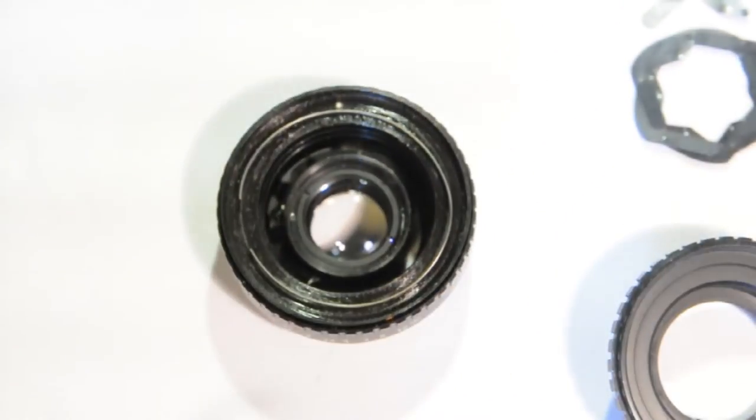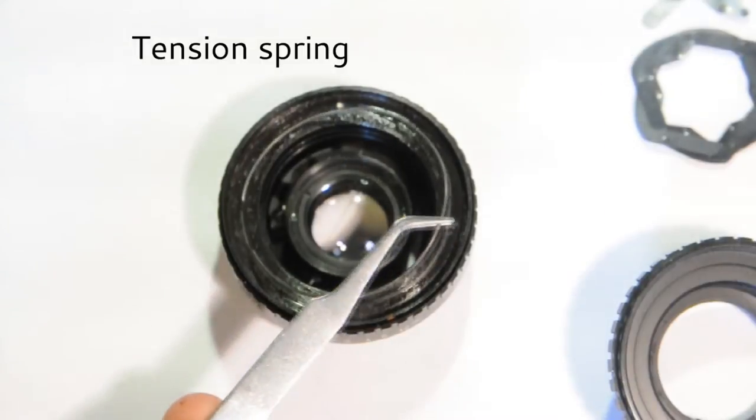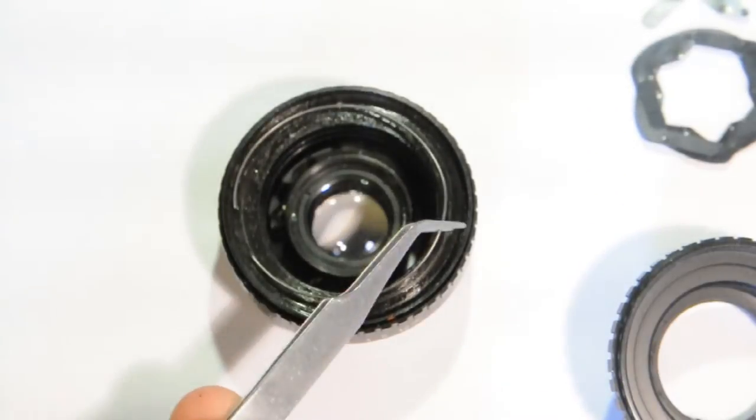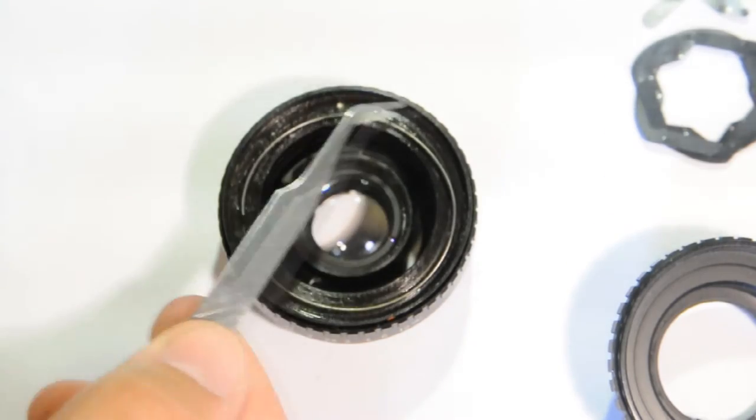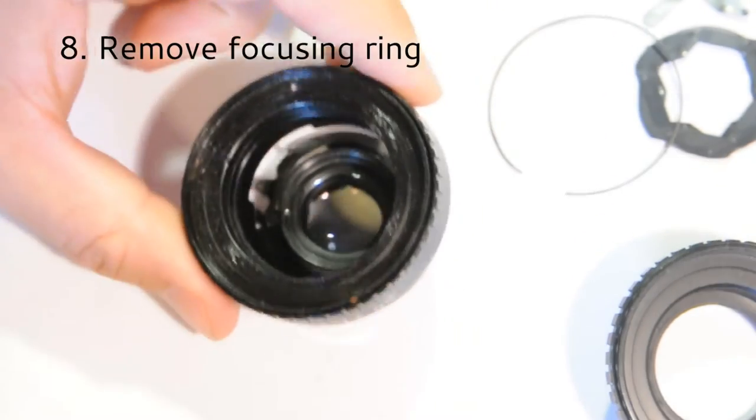Now here, you have the tension spring. It gives the aperture a bit of resistance. There is also some lube here.